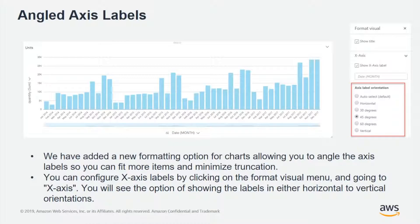Previously, QuickSight would always put the labels horizontally, and for a bar chart like we see in the screenshot here, if you had long names you would only get labels for every 2, 3, 4th or 5th point. The ability to angle these allows you to label all of the individual data points individually.